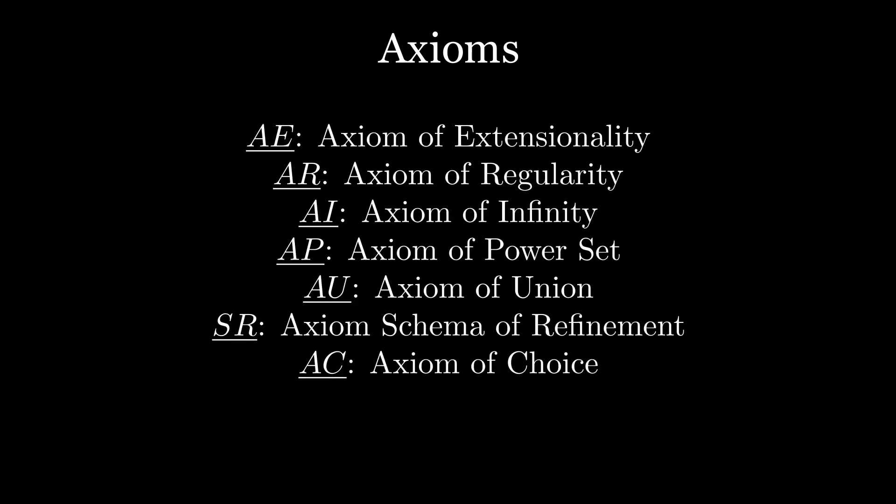While we're at it, let's also introduce short names for the axioms of ZFC, which will be useful in future videos. AE for the axiom of extensionality, AR for the axiom of regularity, AI for the axiom of infinity, AP for the axiom of powerset, AU for the axiom of union, SR for the axiom schema of refinement, and AC for the axiom of choice.